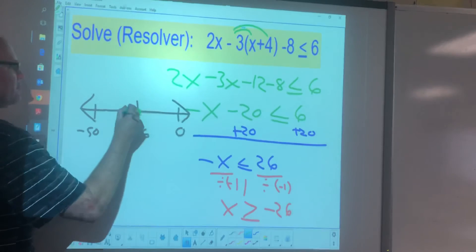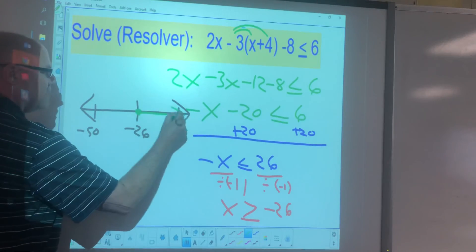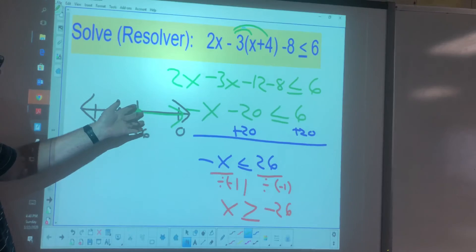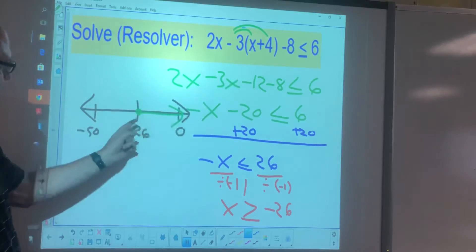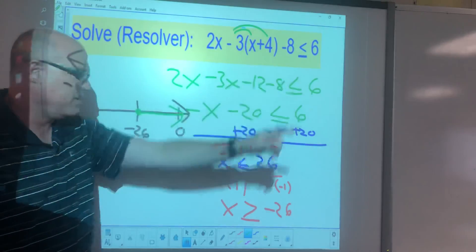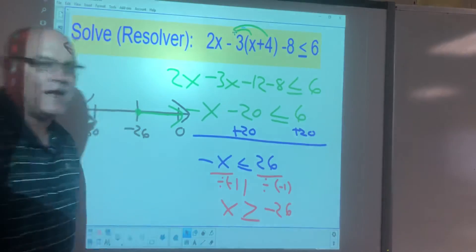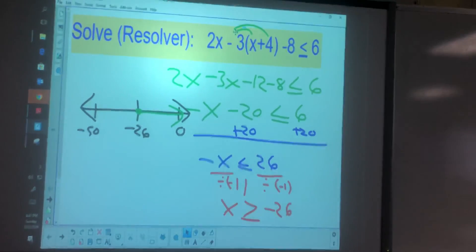So the ray goes this way. So you go simple like this, and that's your solution graphically. That's just a ray going from negative 26 to infinity. We need to keep working on these and get better at them.